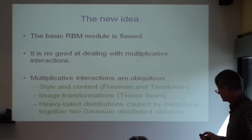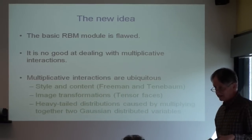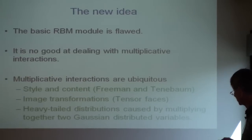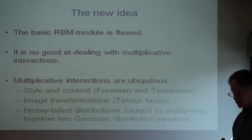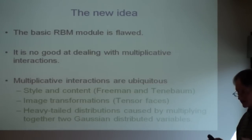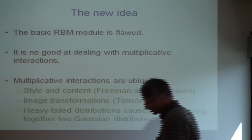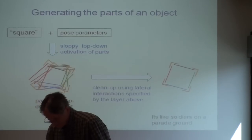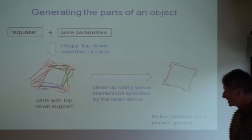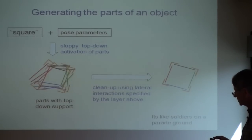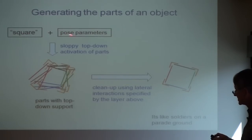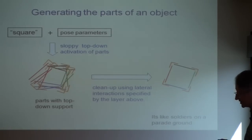The new idea is to use a better kind of module. This module already works pretty well — it does well at phoneme recognition and lots of other things. But it can't model multiplicative interactions very well. It can model anything with enough training data, but it's not happy modeling multiplies, and multiplies are all over the place. Here's the main example of why you need multiplies: suppose I want to, from a high-level description of an object — the name of the shape and its pose, its size, position, orientation — generate the parts of an object and have them related correctly to each other.